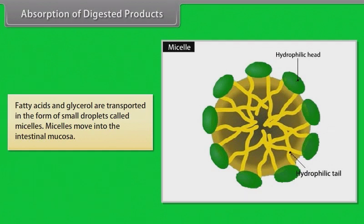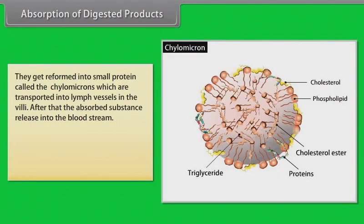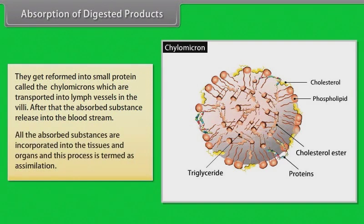Fatty acids and glycerol are transported in the form of small droplets called micelles. Micelles move into the intestinal mucosa and get reformed into small protein particles called chylomicrons, which are transported into lymph vessels in the villi. The absorbed substances are then released into the bloodstream and incorporated into tissues and organs — a process called assimilation.